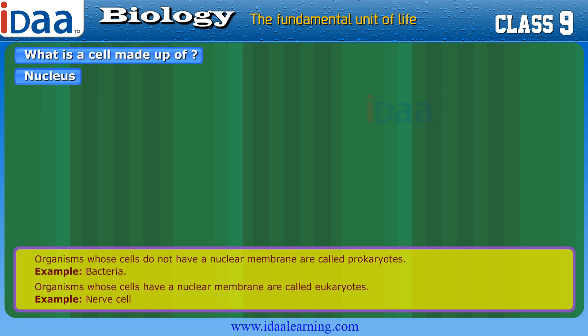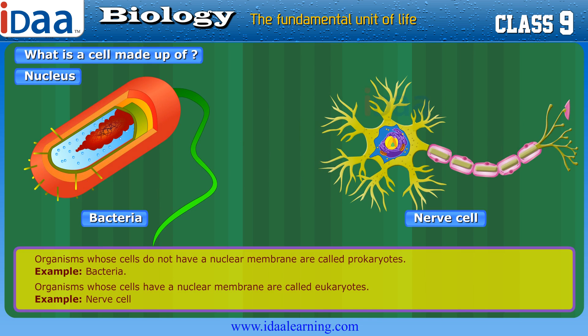Cells are categorized into two types: prokaryotic cells and eukaryotic cells. 'Pro' means primitive and 'karyote' means nucleus.